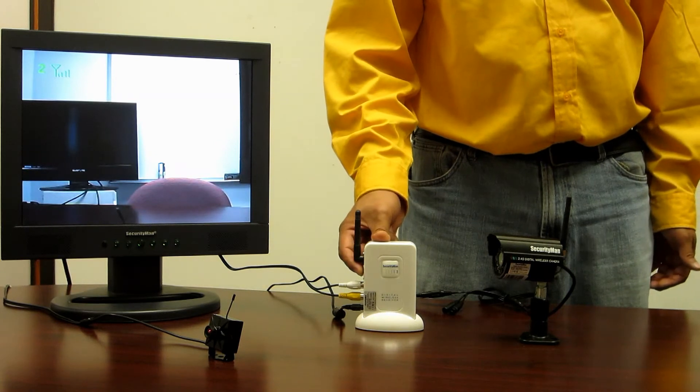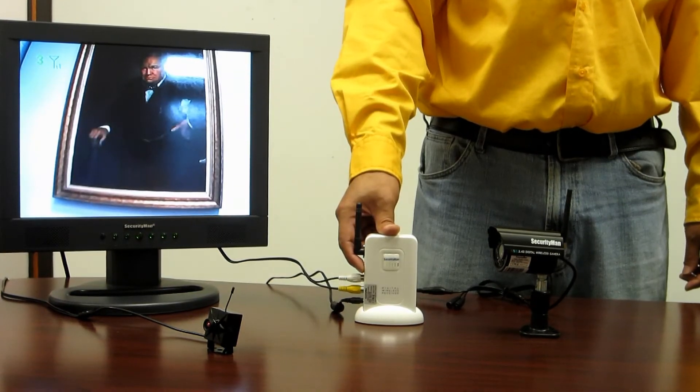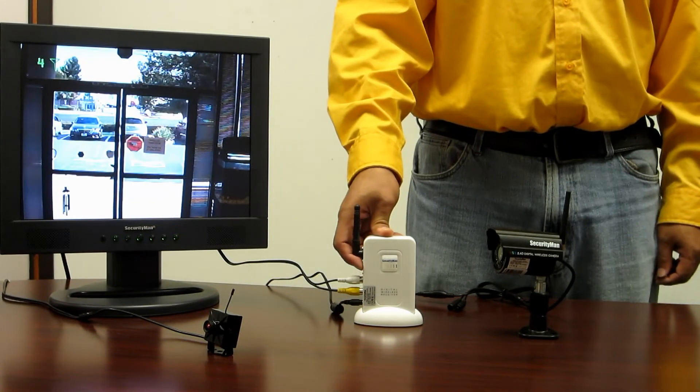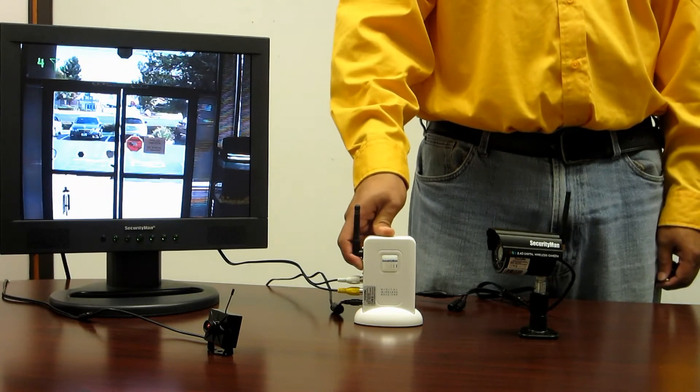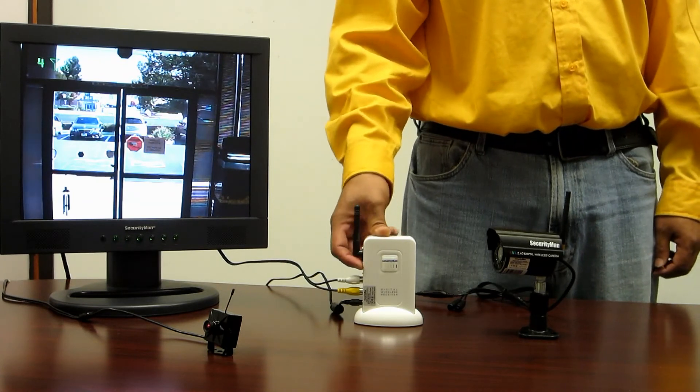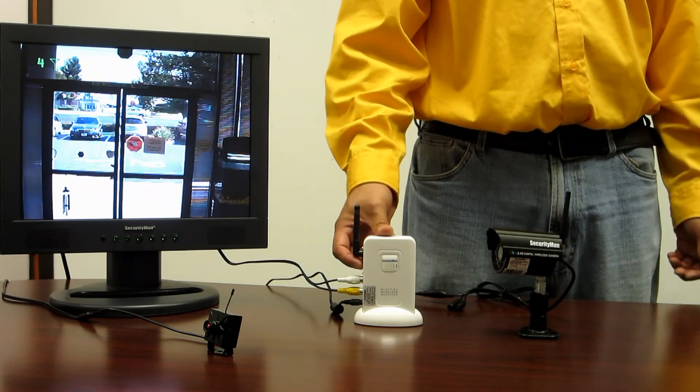Press it once more to get to channel 3. And once more to get to channel 4. After you've reached the 4th channel, you've completed the cycle on the receiver, so pressing it one more time will take you back to channel 1.